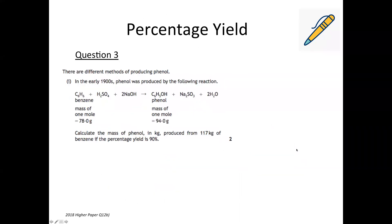The next two are kind of backwards. So in these next two examples we're given the percentage yield and we have to work out what the actual yield is. So we read through the question. Calculate the mass of phenol. So we're putting a question mark above the phenol because we're wanting to work out the mass of that, produced from 117 kilograms of benzene. And then it tells us the percentage yield is 90%.